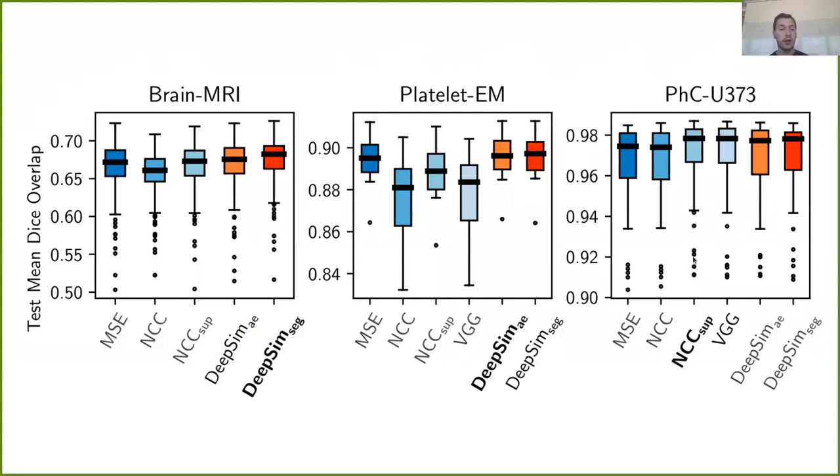For quantitative evaluation, we look at the mean Dice overlap on the test set. And we see here that on two of the datasets, our DeepSim metrics perform best. And on the third dataset, we see that all models achieve very high mean Dice overlaps of over 0.97, and the supervised metric performs best here. But in all three cases, the DeepSim metrics are among the best, while some of the baseline methods sometimes work well, sometimes don't.